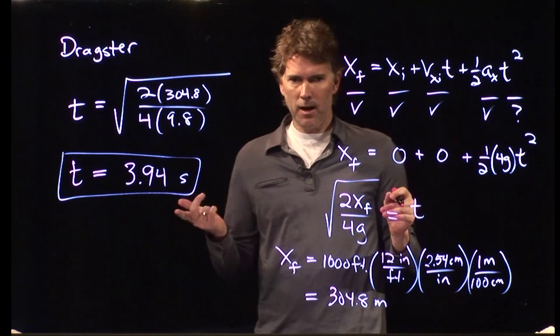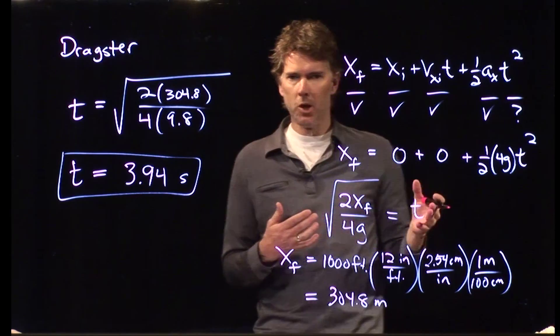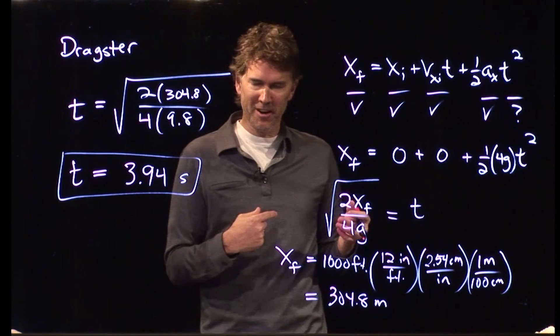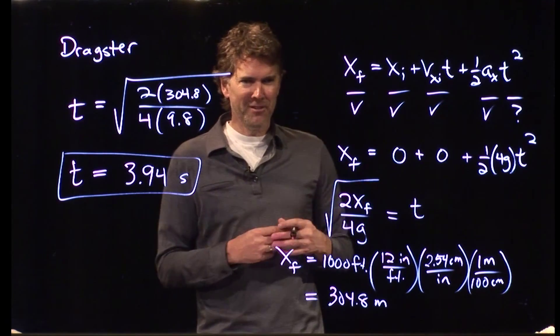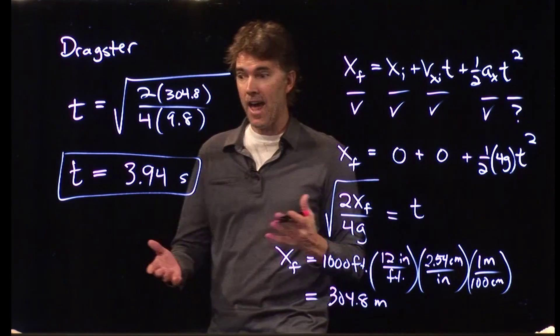And it turns out 1,000 feet is the real number that they use at the dragster. It used to be longer than that. It used to be a quarter mile. But the cars ended up going too fast and the tires would disintegrate, and they didn't like that very much, so they shortened the track a little bit so the cars didn't end up going as fast.